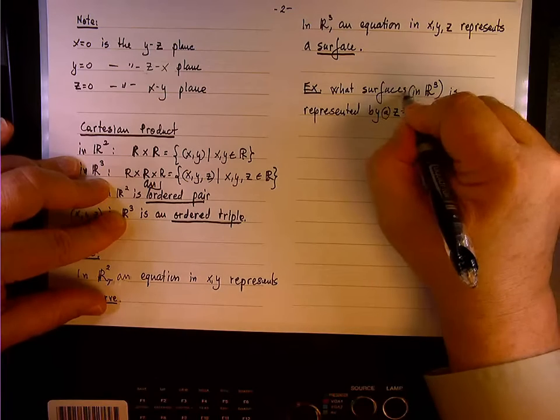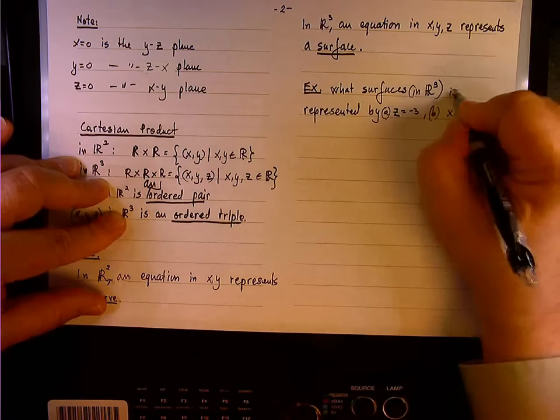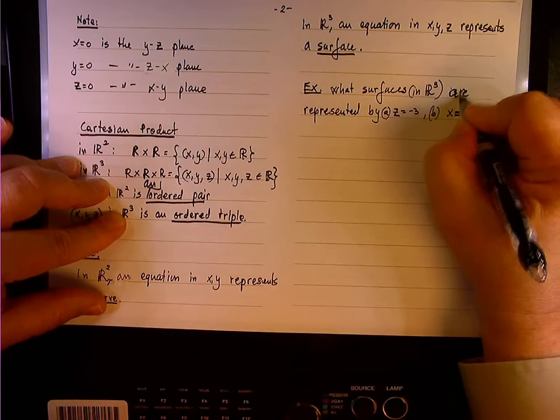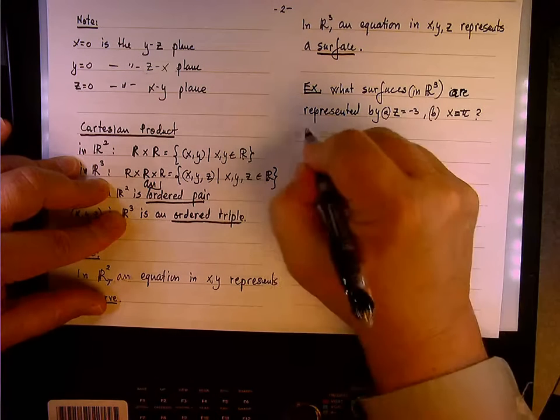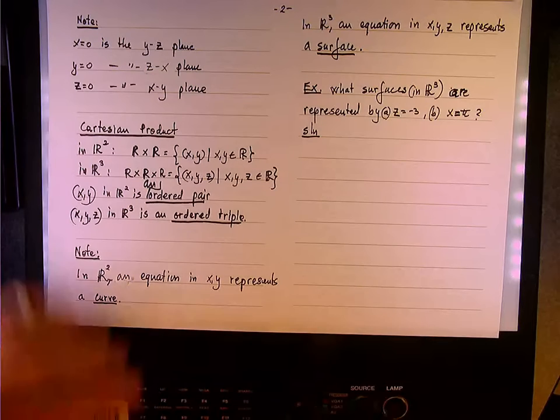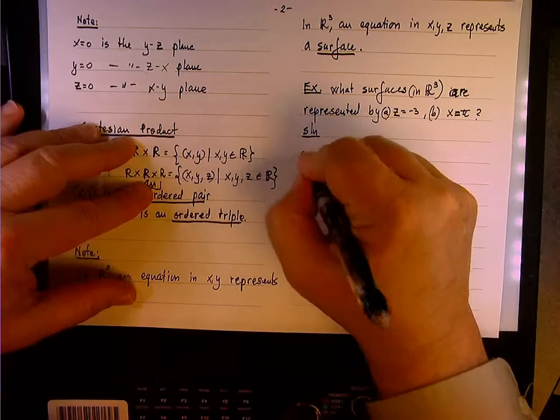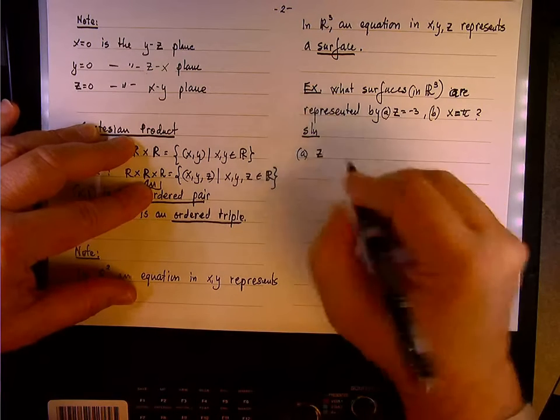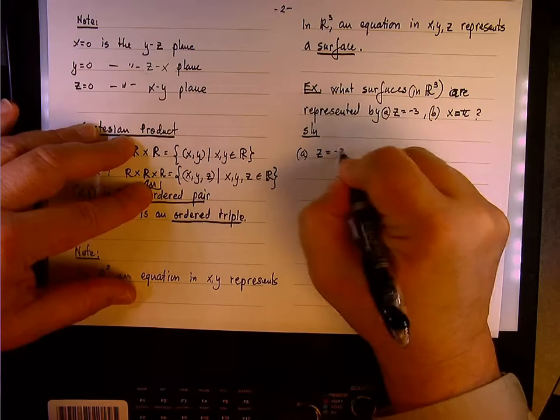So what surfaces? So z equals negative 3.